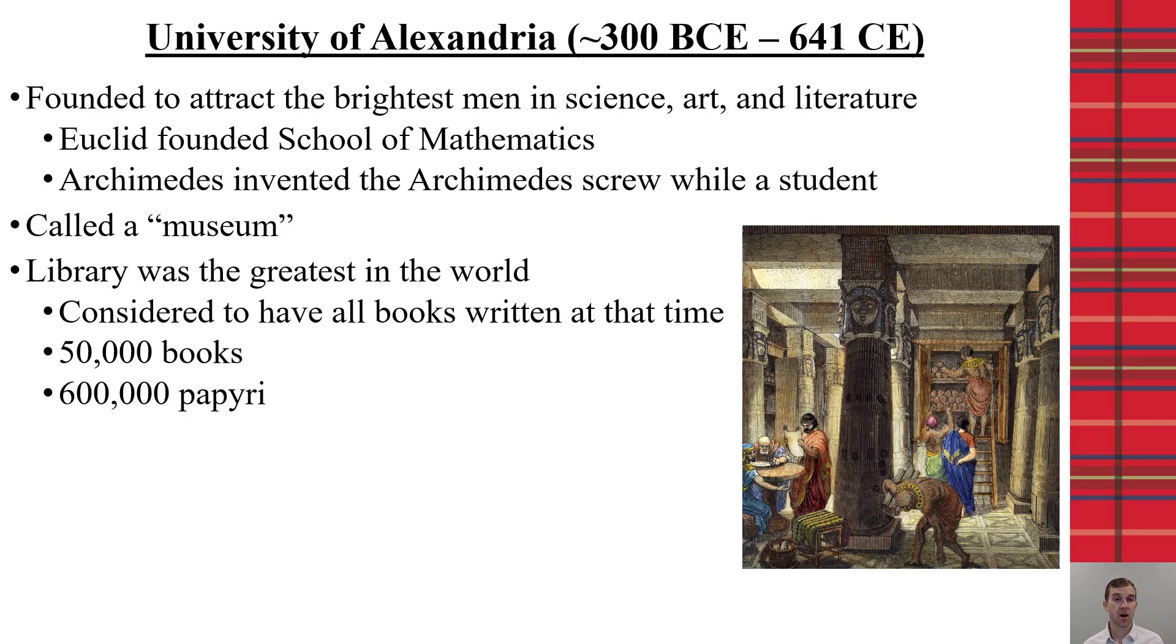For example, Euclid became the headmaster of the School of Mathematics, and it was said that Archimedes was a student there and created his Archimedes screw while being a student at the university. We look at how the University of Alexandria was constructed, and many of our universities nowadays follow very similar patterns, with one of the key functions of it being the library.